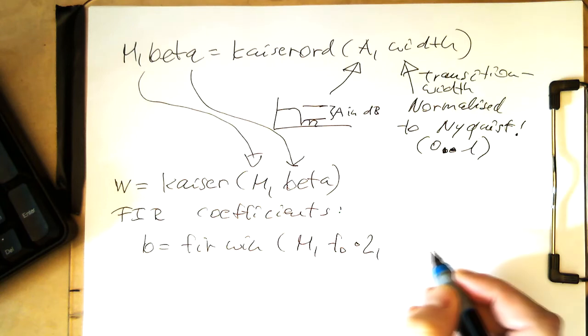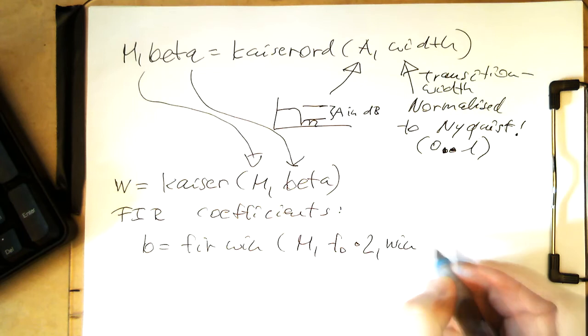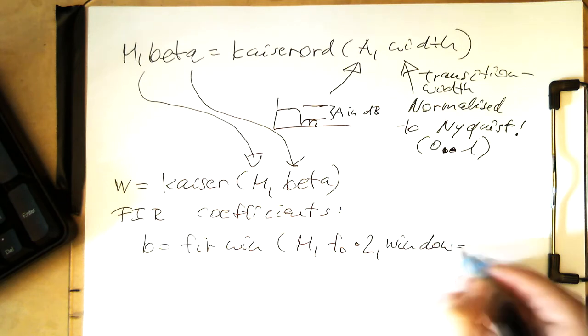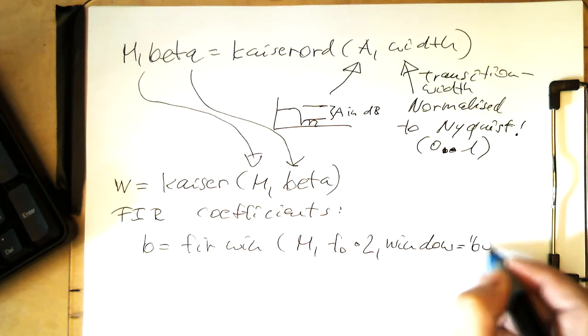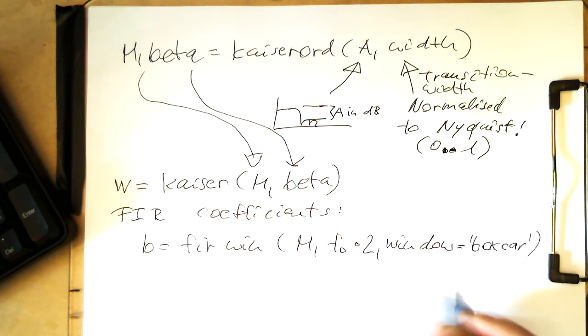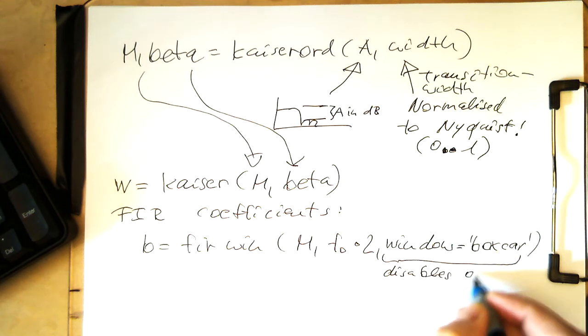And now we need to add something here, to prevent the firwin command from using actual window function by itself. Because otherwise, it would do that. So it just switches off. So disables own window.